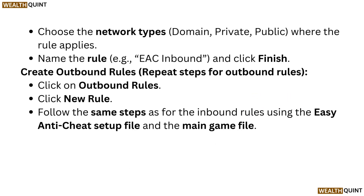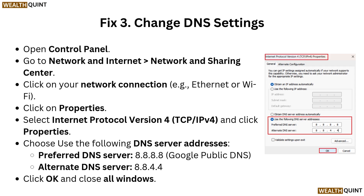Choose the network types — Domain, Private, Public — where the rule applies. Name the rule, for example 'EAC Inbound', and click Finish. Create outbound rules by repeating the same steps: click on Outbound Rules, click New Rule, and follow the same steps as for the inbound rules using the Easy Anti-Cheat setup files and the main game files.